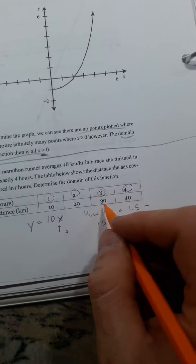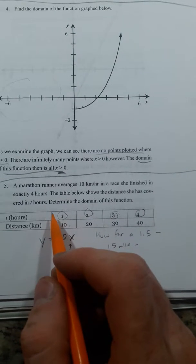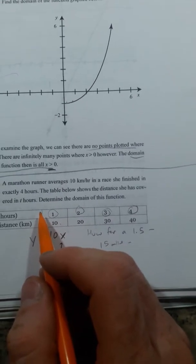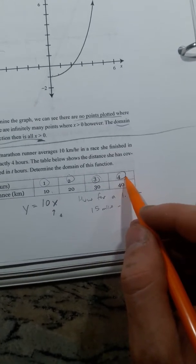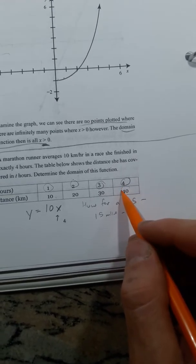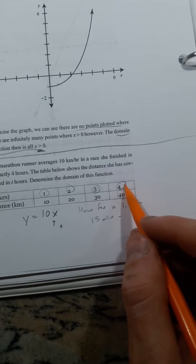So I can choose any number, but I can't go less than 0, because that would make sense to have negative time. And he finished the race in 4 hours, so he only went 40 kilometers. So I can't go above 4 hours.